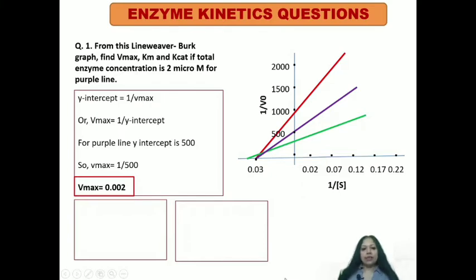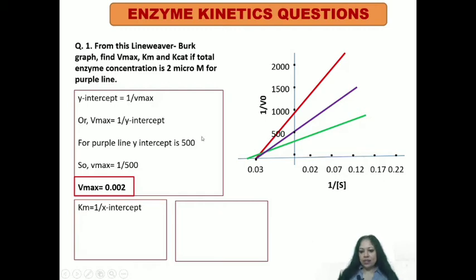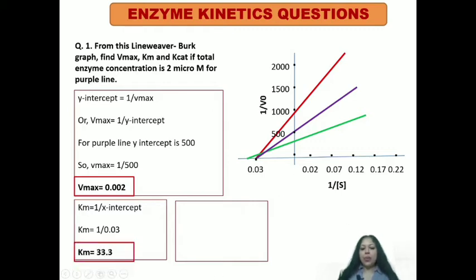Second, you need to calculate Km. You know that Km is related to the x-intercept — specifically, the point where the slanting line touches the x-axis. Km is equal to 1 upon 0.03, because the purple line touches that value on the x-axis. So the Km value would be 33.3 — a very simple calculation.